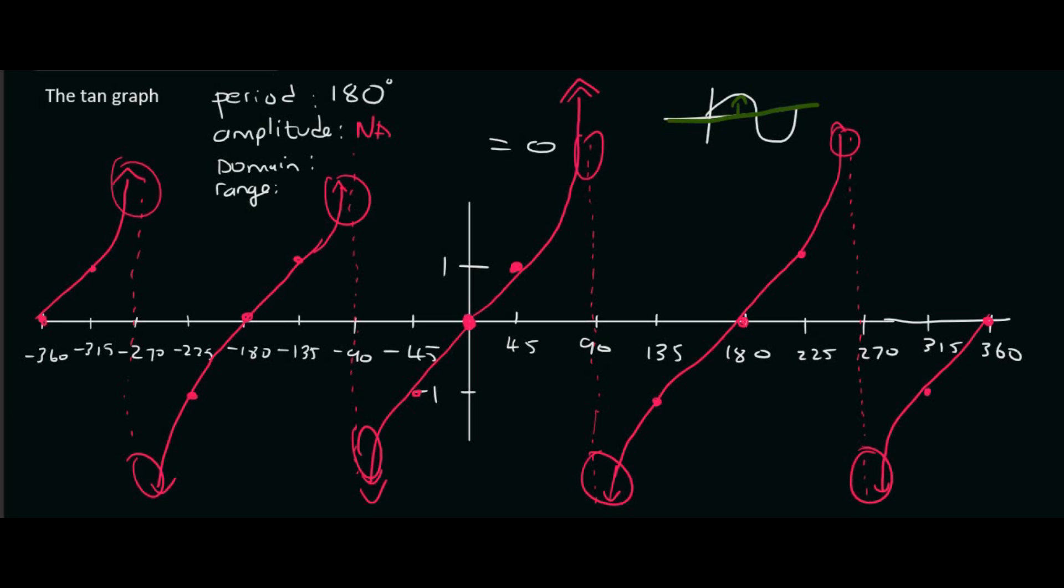The domain. Well that's just what they've given you. So they've clearly given us from minus 360 up to 360. So you'll just say X element going from minus 360 up to 360. But what's very important, I nearly forgot, is that the graph does not exist at 90, 270, minus 90, minus 270.